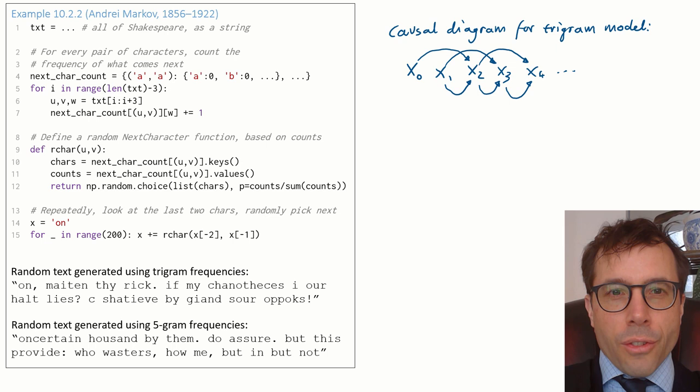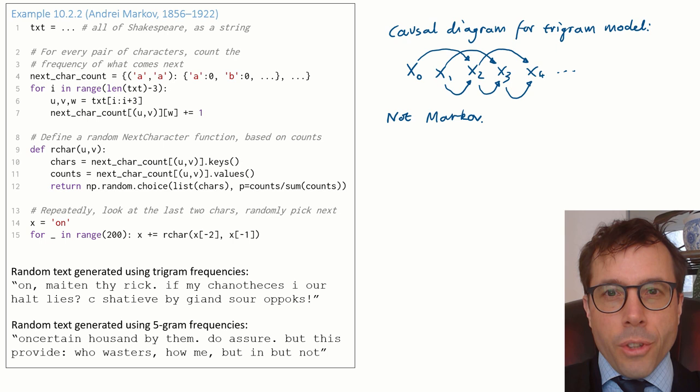We started with x0 and x1, based on those two, the code generated x2, based on x1 and x2 it generated x3, and so on. This is not a Markov chain. Markov chains have to be linear causal diagrams, each value generated using only the one that came immediately before. So what gives?